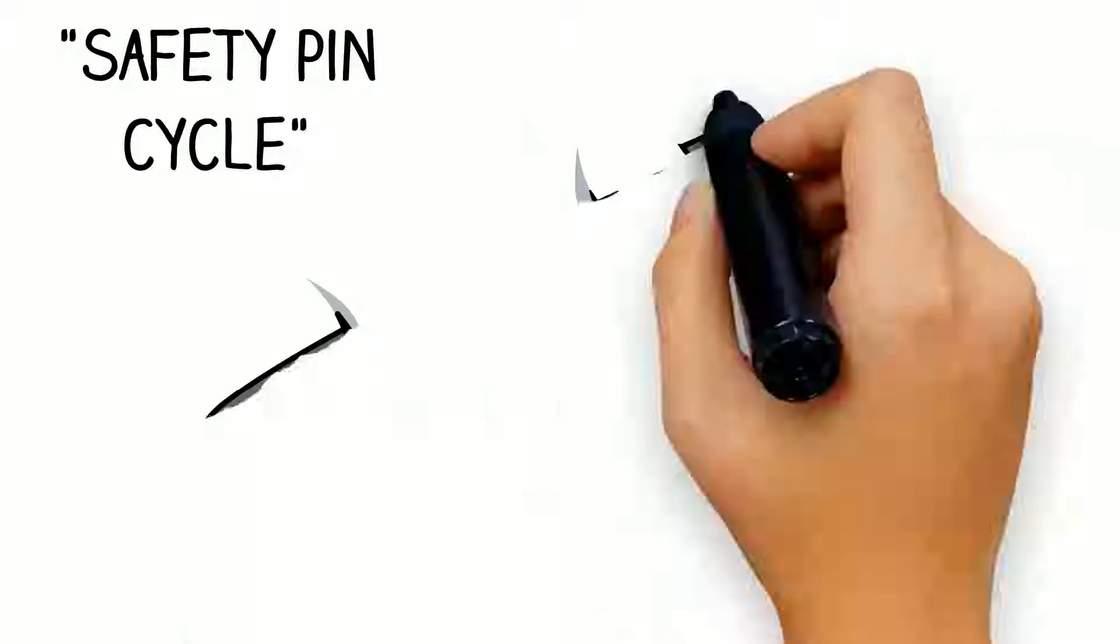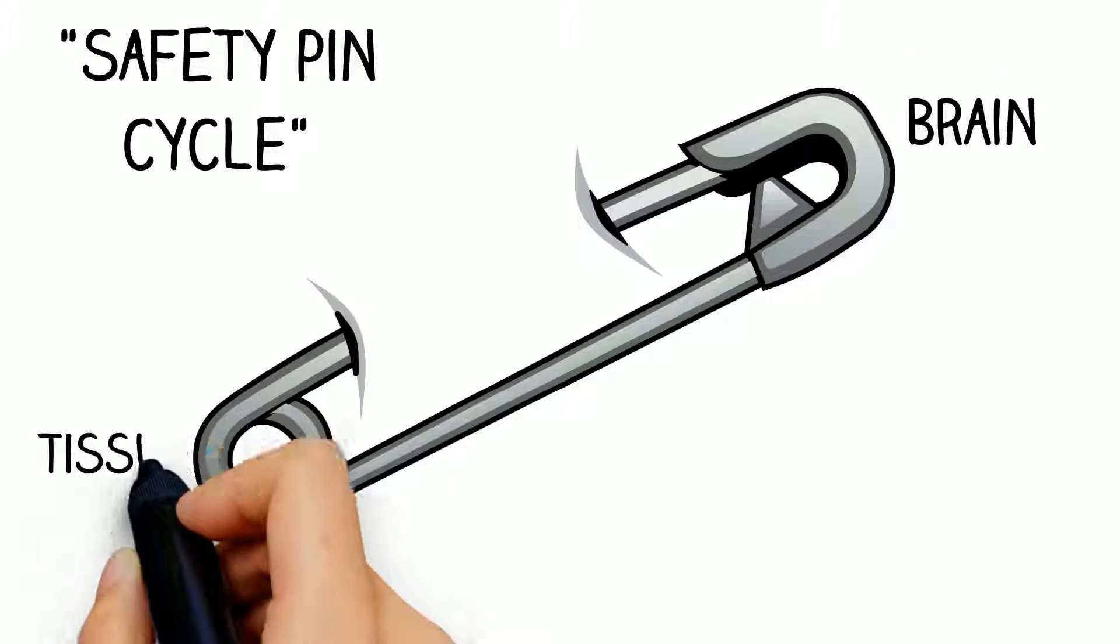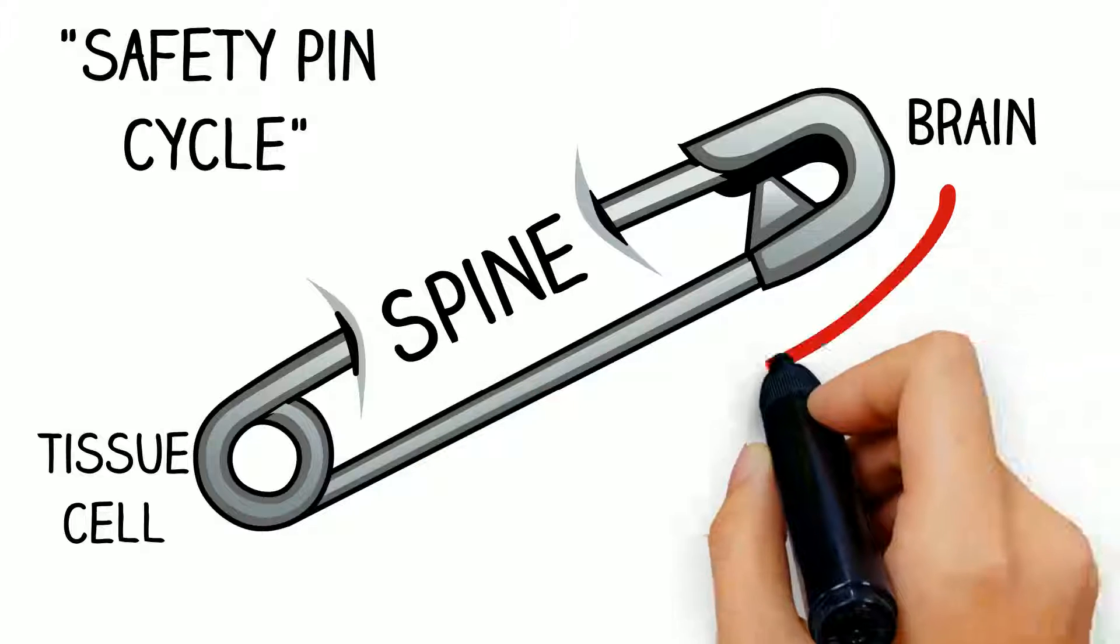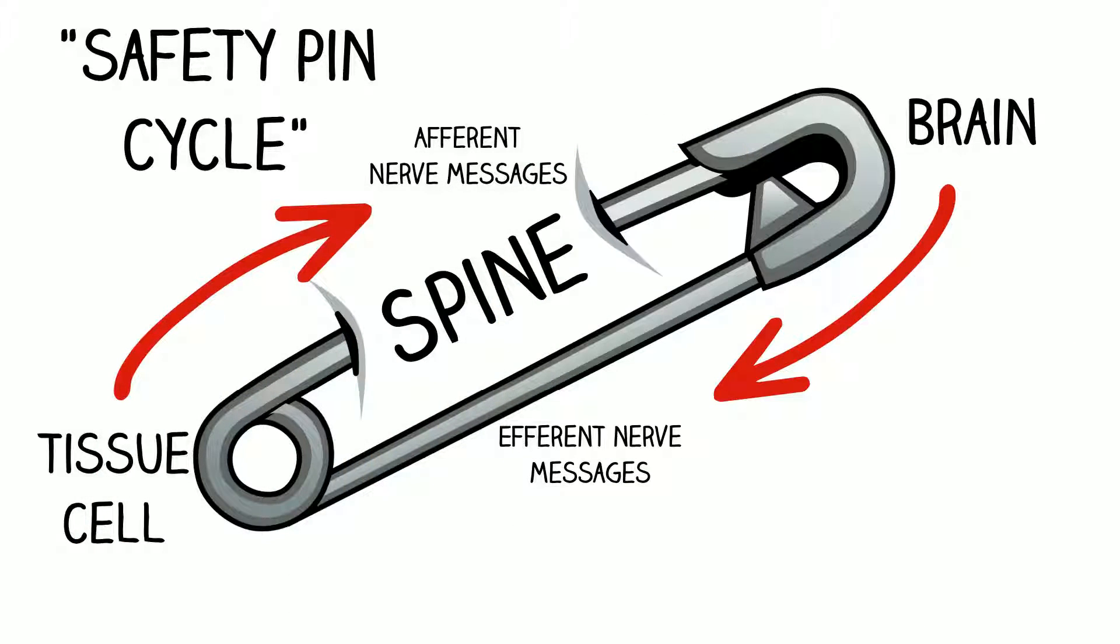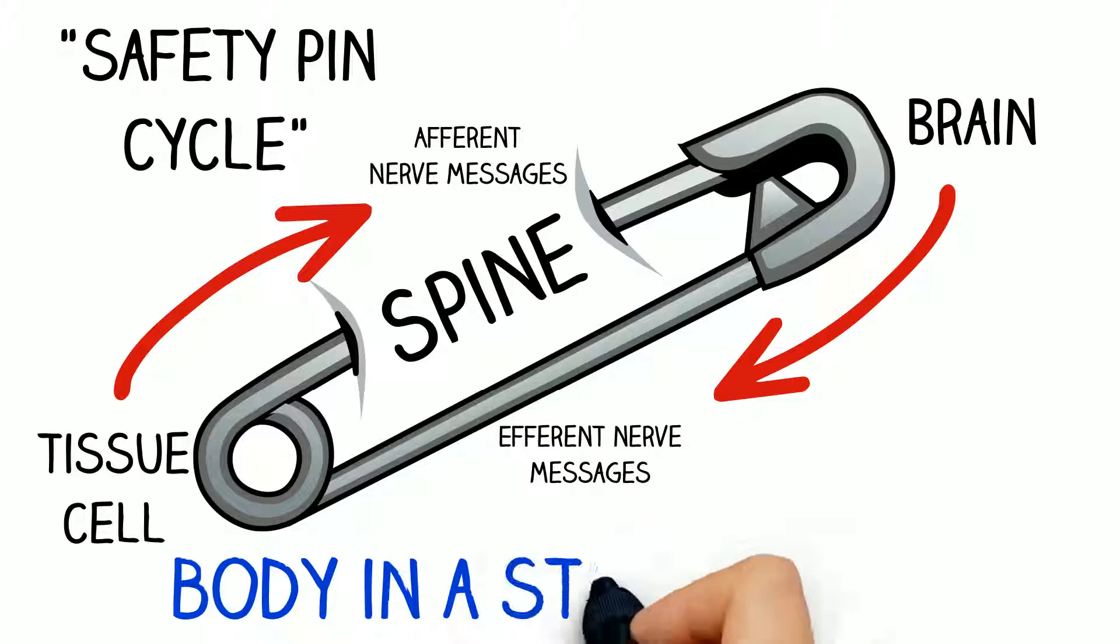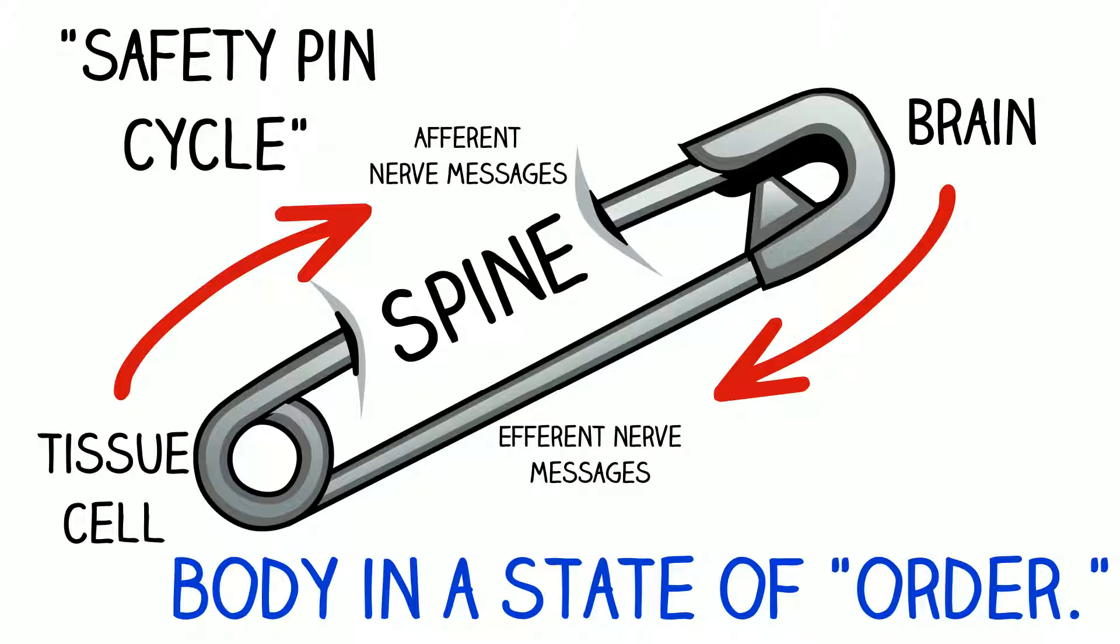The safety pin cycle helps illustrate how. One end represents the brain and the other the tissue cells with the spine in the middle. When the spine is clear and connected, the brain sends out signals to the tissue cells and the cells send feedback to the brain. That's what keeps your organs organized.